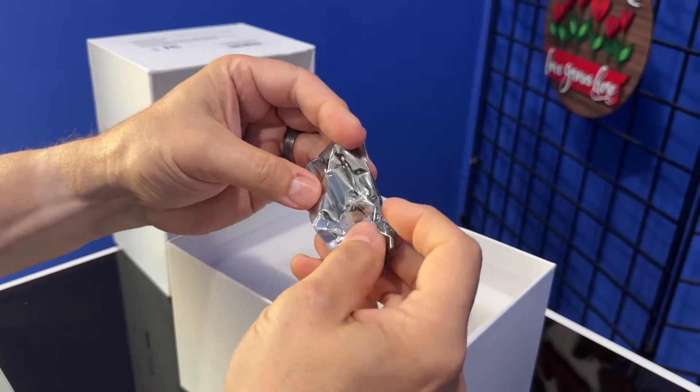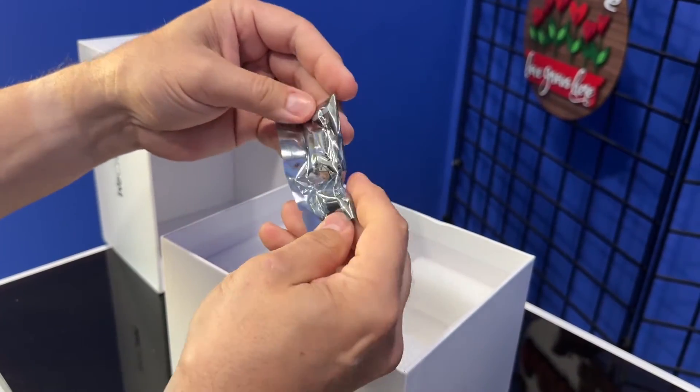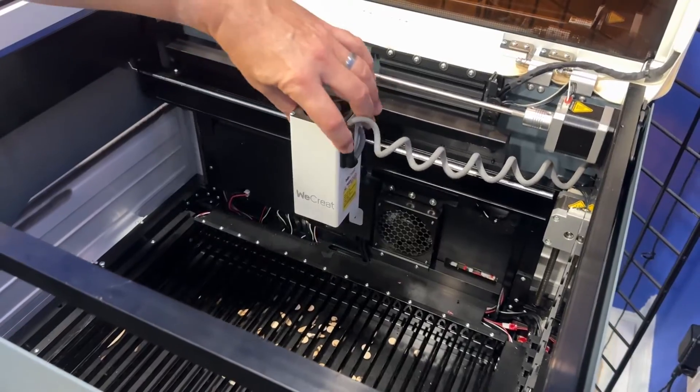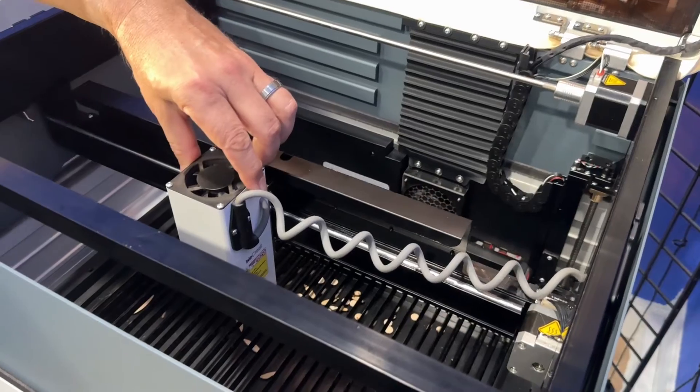They give you a couple of aluminum sheets to practice with. Here's another power board that you have to install. They do give you a tool and some screws in case you drop them and they fall into never, never land.